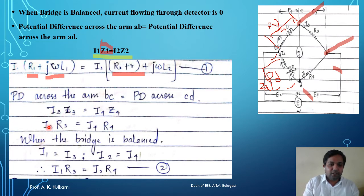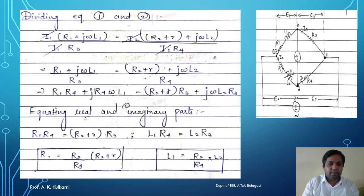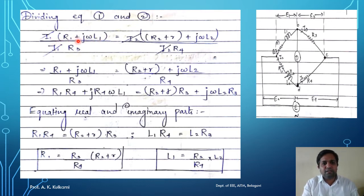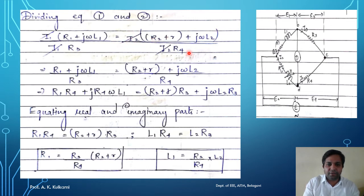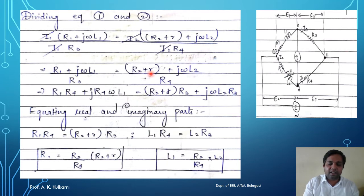After getting equations 1 and 2, we now divide equation 1 by equation 2. So (I1 × (R1 + jωL1)) divided by (I1 × R3) equals (I2 × (R2 + r + jωL2)) divided by (I2 × R4). I1 and I1 cancel, and I2 and I2 cancel. What remains is: (R1 + jωL1) / R3 = (R2 + r + jωL2) / R4.